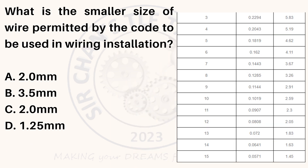What is the smallest size of wire permitted by the code to be used in wiring installation? A. 2.0 mm. B. 3.5 mm. C. 2.0 mm. D. 1.25 mm.